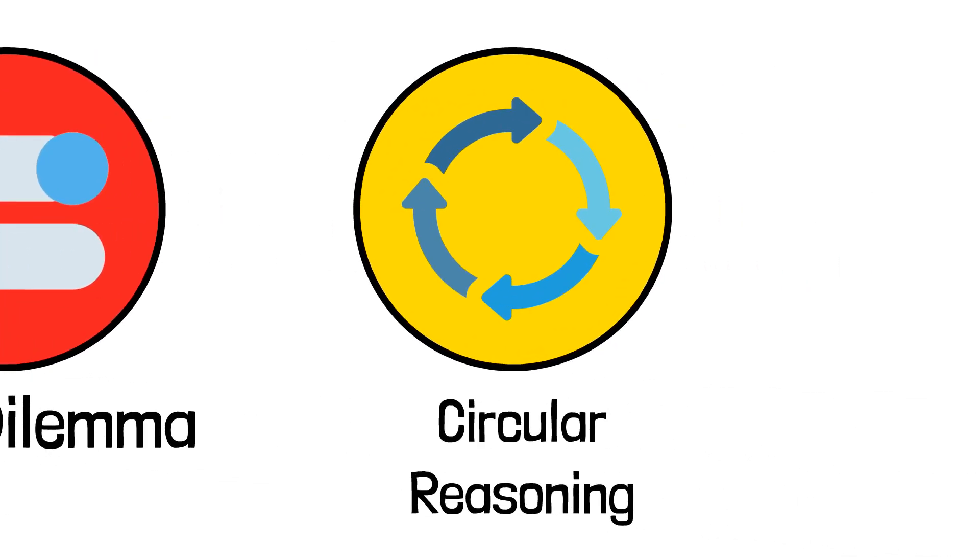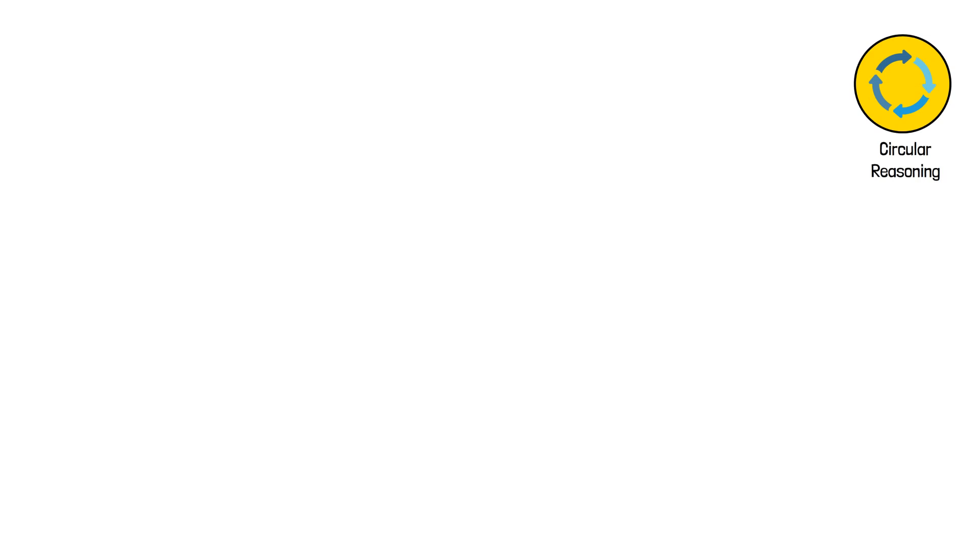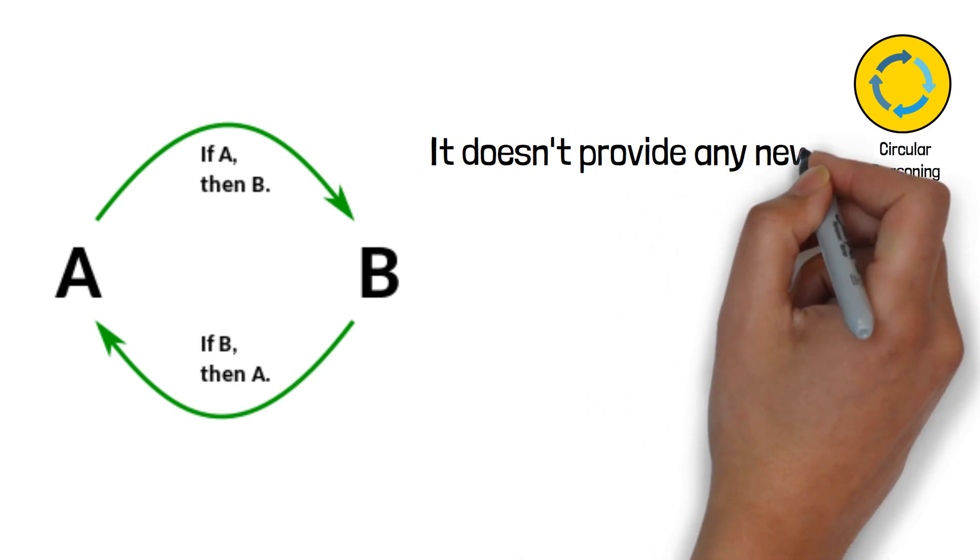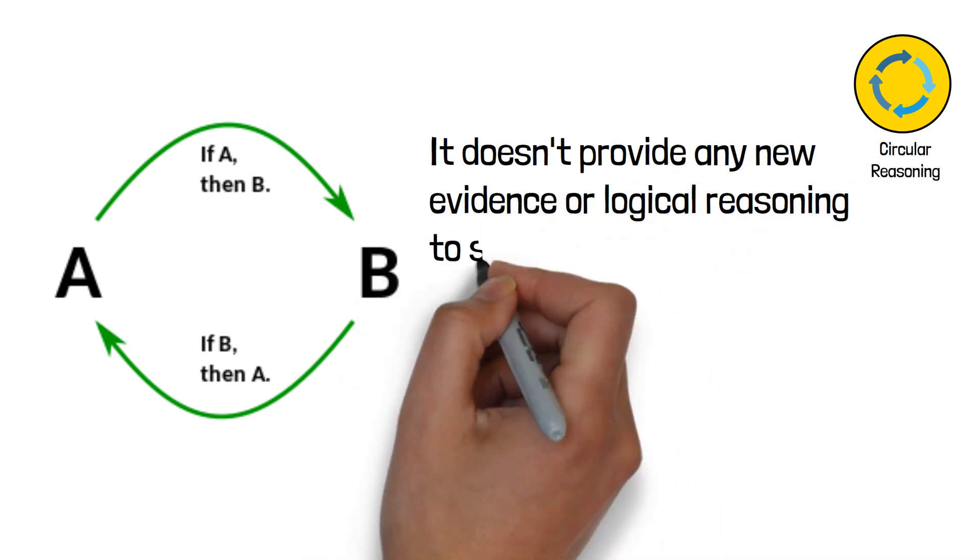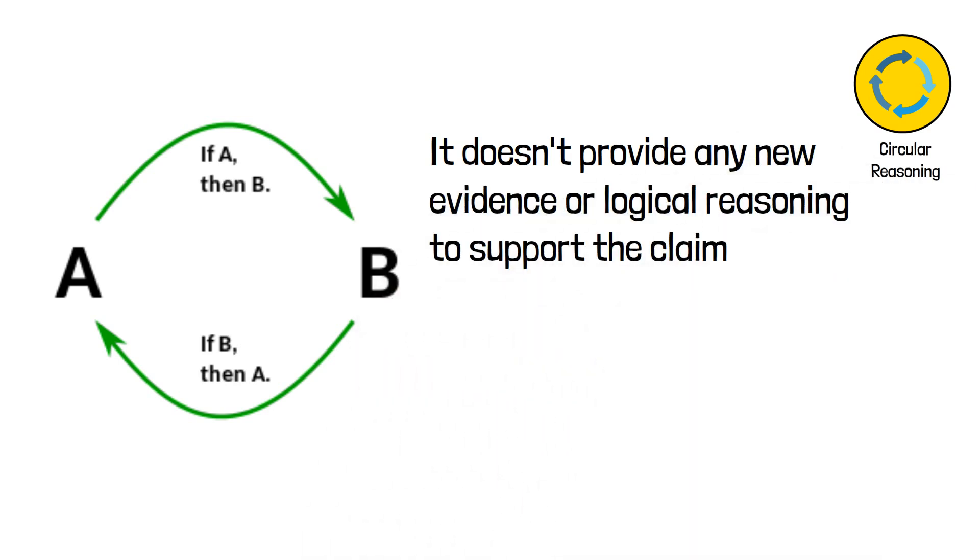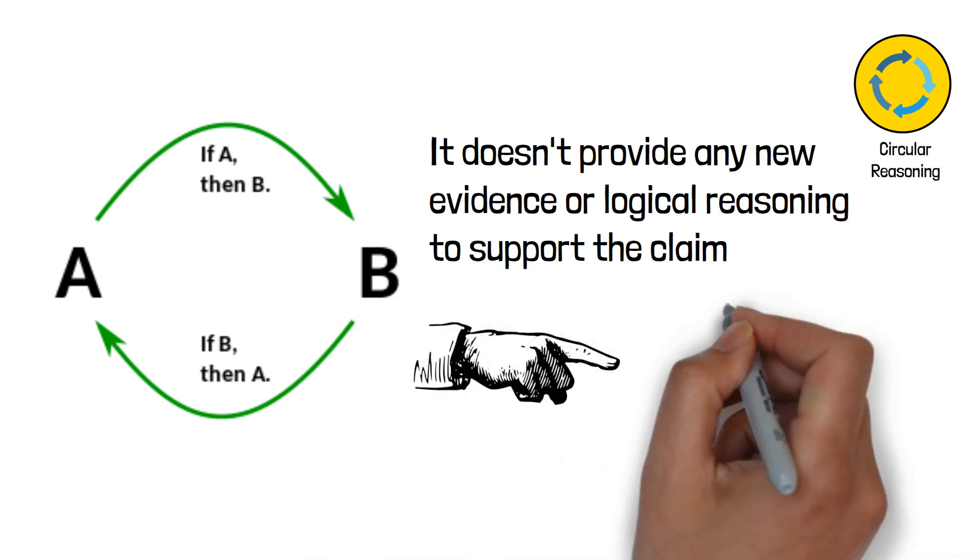5. Circular reasoning. This fallacy involves using the conclusion of an argument as a premise to support the same conclusion. It is a logical fallacy because it doesn't provide any new evidence or logical reasoning to support the claim. Instead, it creates a circular and self-referential argument that lacks substance.